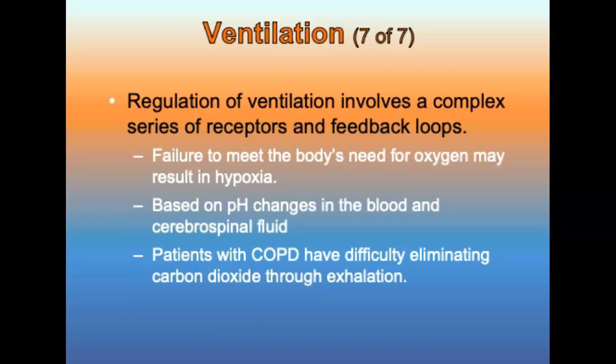Regulation of ventilation involves a complex series of receptors and feedback loops that sense gas concentrations in body fluids and send messages to the respiratory center in the brain to adjust rate and depth of ventilation. The body's need for oxygenation is constantly changing, and failure to meet this need may result in hypoxia — an extremely dangerous condition where tissues and cells do not get enough oxygen, which can cause patients to die quickly. For most people, the drive to breathe is based on pH changes in the blood and cerebrospinal fluid. Patients with COPD have difficulty eliminating carbon dioxide through exhalation, so they always have higher carbon dioxide levels, and respiratory centers in the brain gradually adjust to accommodate this.